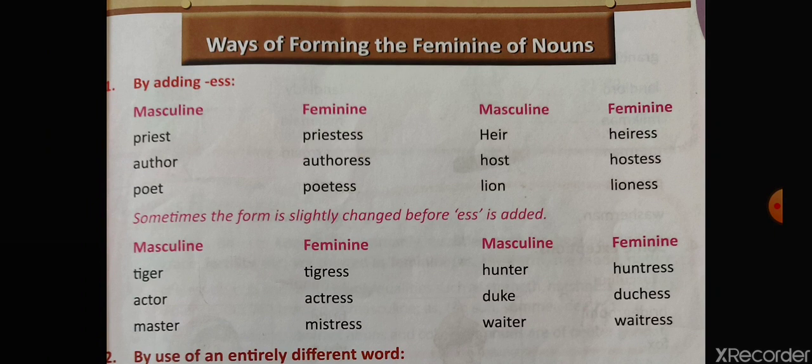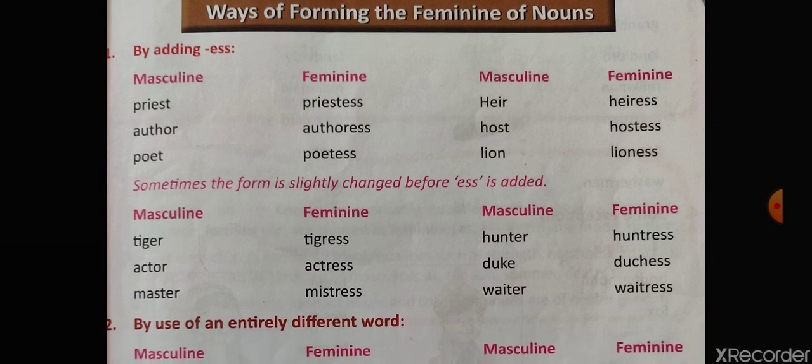For example: priest becomes priestess, author becomes authoress, poet becomes poetess, host becomes hostess, lion becomes lioness. Similarly, some words are slightly changed before '-ess' is added — the last vowel of the word is removed. For example, tiger (T-I-G-E-R) — the vowel 'e' is removed and '-ess' is added.